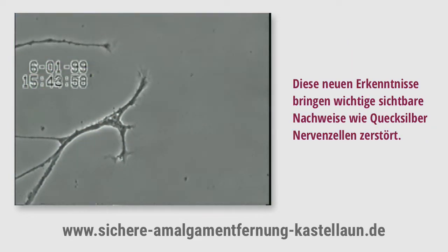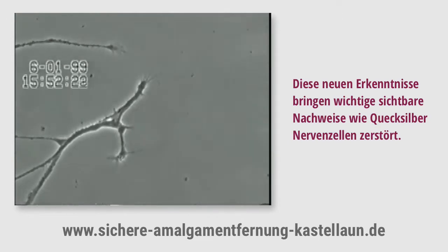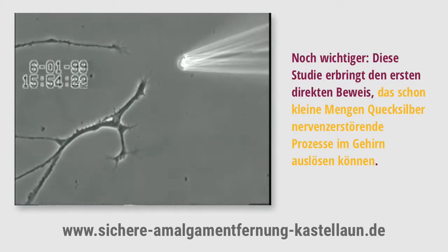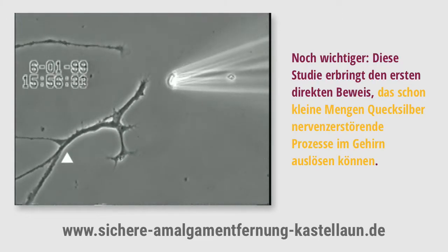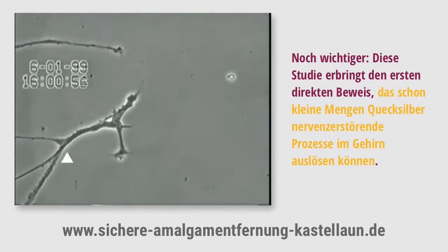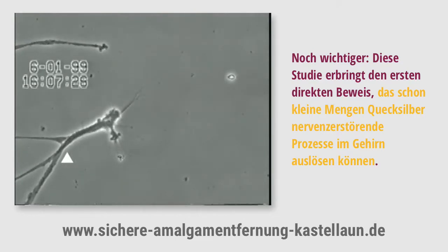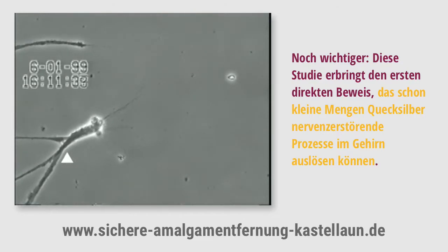These new findings reveal important visual evidence as to how mercury causes neurodegeneration. More importantly, the study provides the first direct evidence that low-level mercury exposure is indeed a precipitating factor that can initiate this neurodegenerative process within the brain.